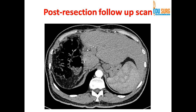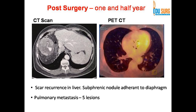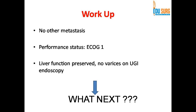However, one and a half years after the surgery — so now into early 2017 — there were a few pulmonary lesions and a scar recurrence in the liver which developed within six months of the previous scan, with this nodule adherent to the diaphragm. The patient had a recurrence in the abdomen adherent to the diaphragm, as well as approximately five pulmonary metastases, which you can see in the PET-CT image. There were no other metastases, performance status was good, and liver function was preserved with no varices on upper GI endoscopy. He had also achieved clearance for hepatitis C treatment by this point.